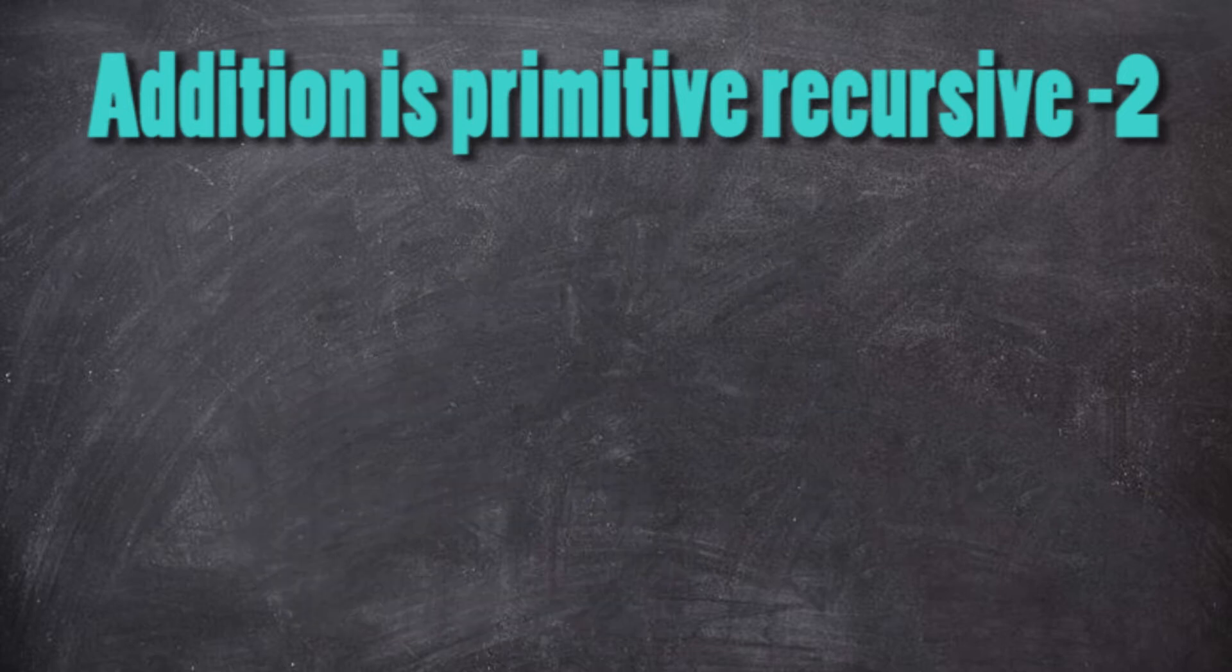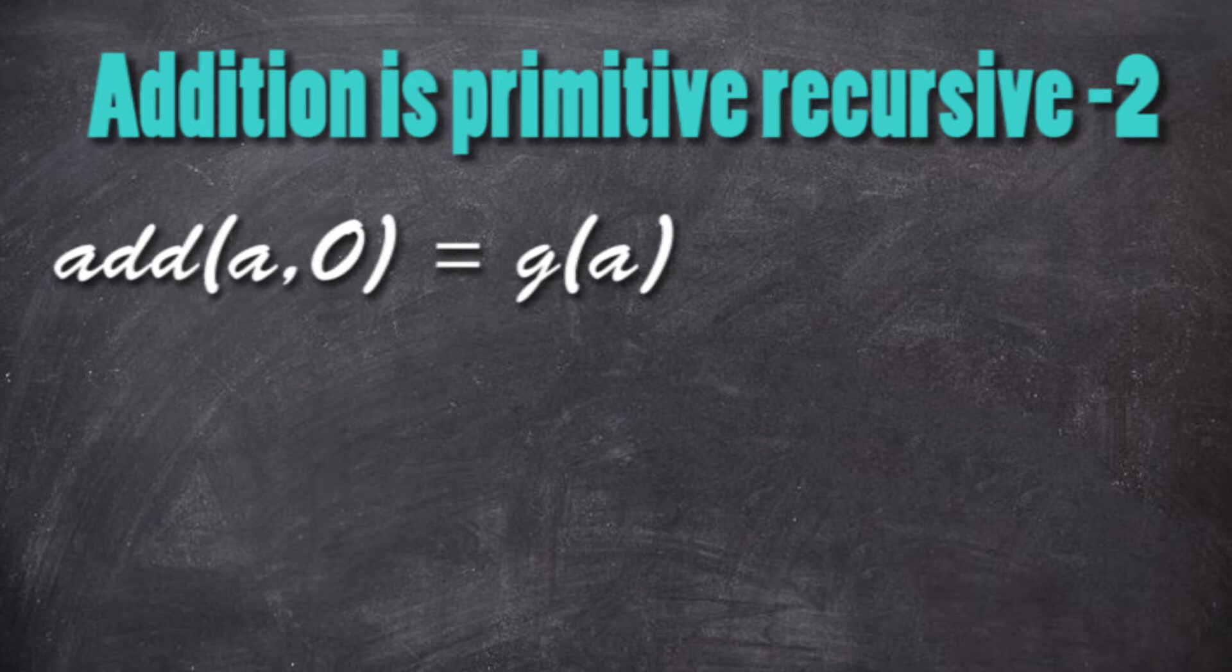Now, how do we write this with the formal recursion? The addition of A and 0 equals to function g that takes all the parameters without the last one, so only A here.